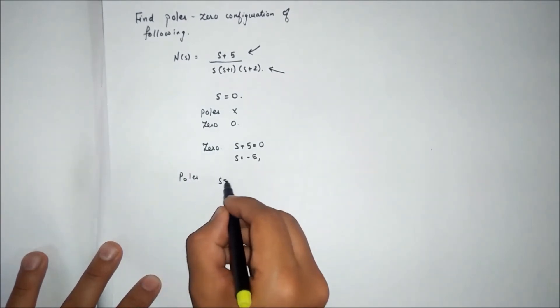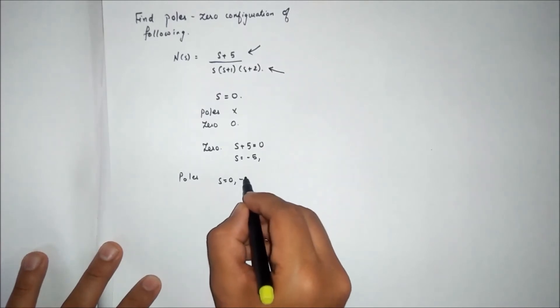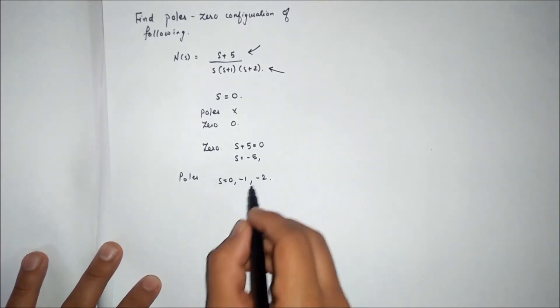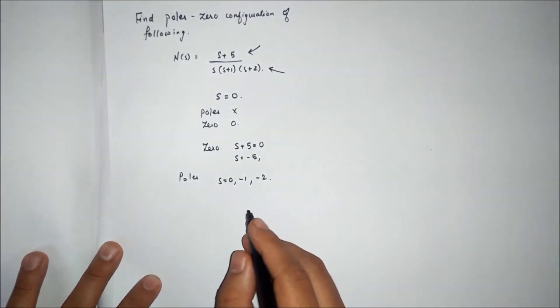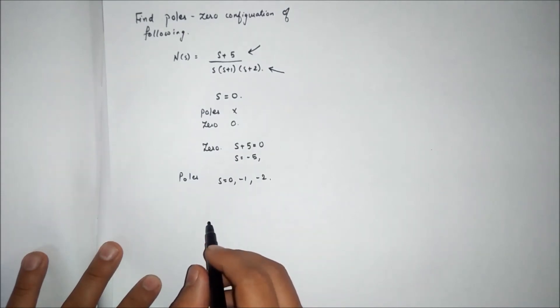s equals zero, minus one, and minus two. Now we'll draw the diagram.